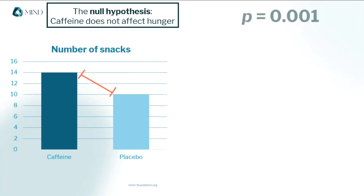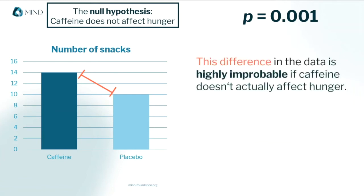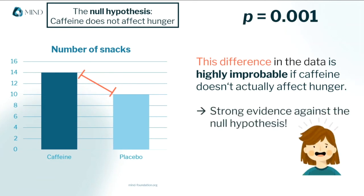It's a different story if I get a really low p-value, let's say 0.001. Then there's only a 0.1% chance that I would see this difference in my data if the null hypothesis is true and caffeine does not affect hunger. So this p-value says there's strong evidence that I can reject the null hypothesis and claim that there's evidence that caffeine makes people hungrier.